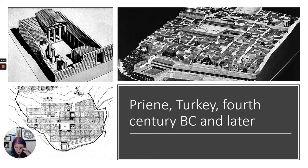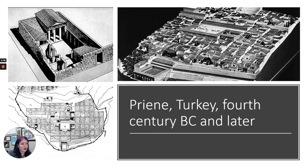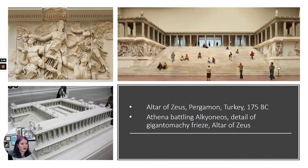Another thing that we see at this time is this idea of structured city planning — intentional design where we have these grid-like cities where in the center they have stoas, a marketplace around a forum. Often there's a temple and a theater in the center of the city as well, and everything radiates out from that, very intentionally planned and laid out. All the houses are sort of standardized and laid out like a grid. This is another thing we see in the Hellenistic period where things are more intentionally planned.